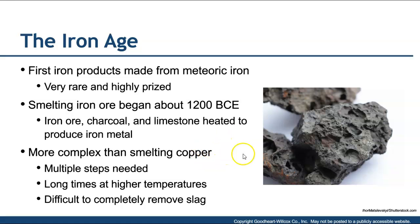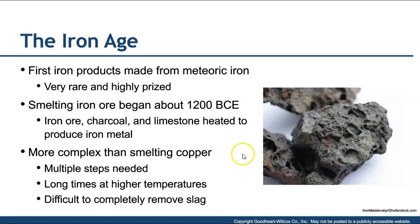Here's the thing to remember about iron: it is definitely more complex than smelting copper. Multiple steps are needed, longer times, higher temperatures, and difficulty completely removing the slag. Slag, in modern terms, is waste material or leftover undesirable stuff we try to remove from the molten material. Even today we still follow multiple steps, but we are capable of achieving higher temperatures and removing slag much better than during the Iron Age.